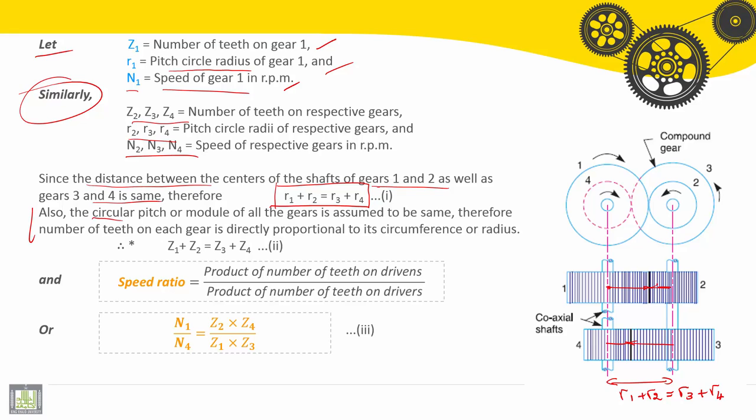Also, the circular pitch or module of all the gears is assumed to be the same. Therefore, number of teeth on each gear is directly proportional to its circumference or radius. We will find Z₁ + Z₂ is equal to Z₃ + Z₄.